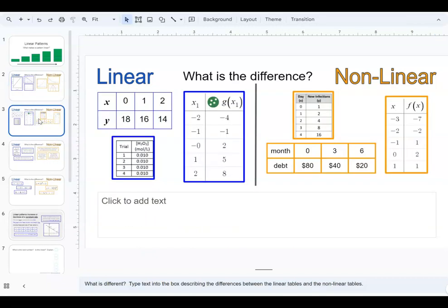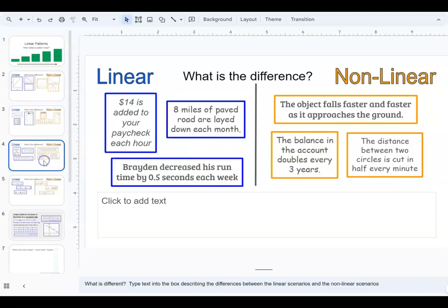We start with graphs, then we look at the tables, what makes linear or nonlinear. In the teacher's edition of this I do have some discussion notes in there so you'll want to look over those before you go through this with your kids. And then there's some scenarios. Some of these are linear, some are not. What's different?